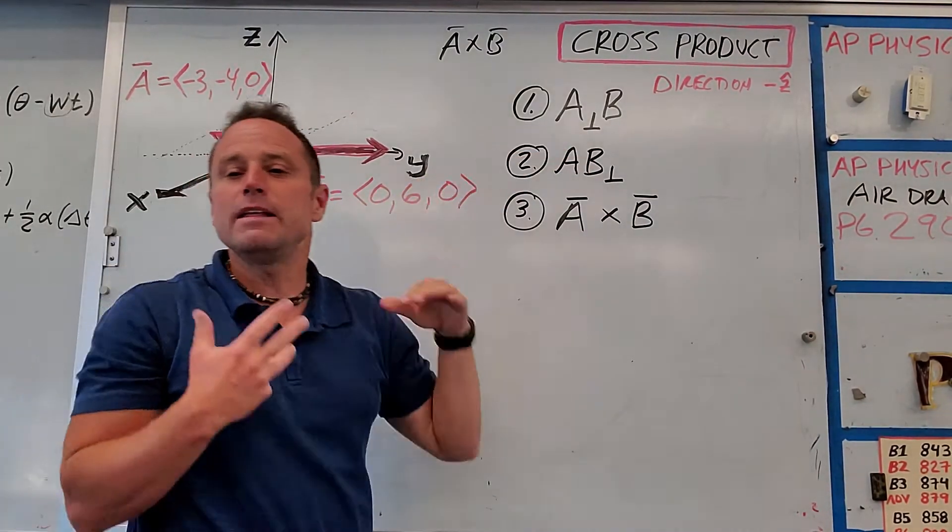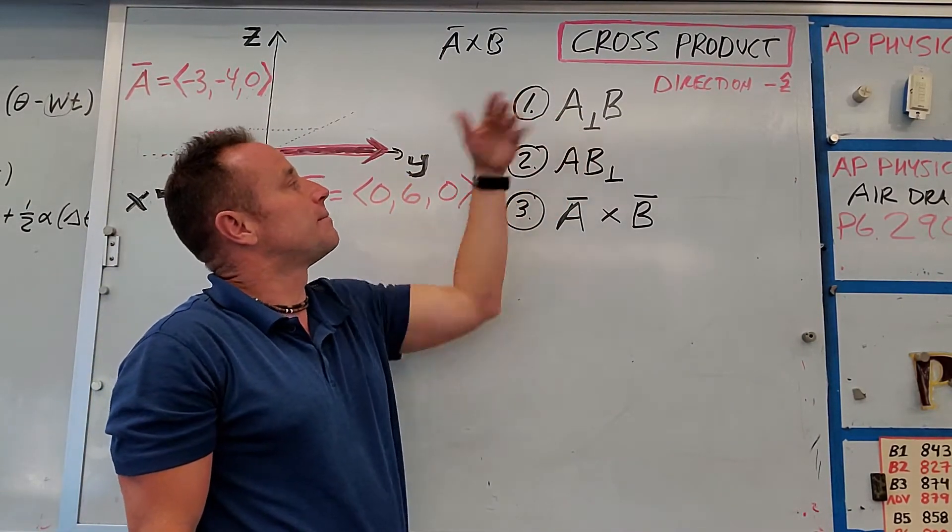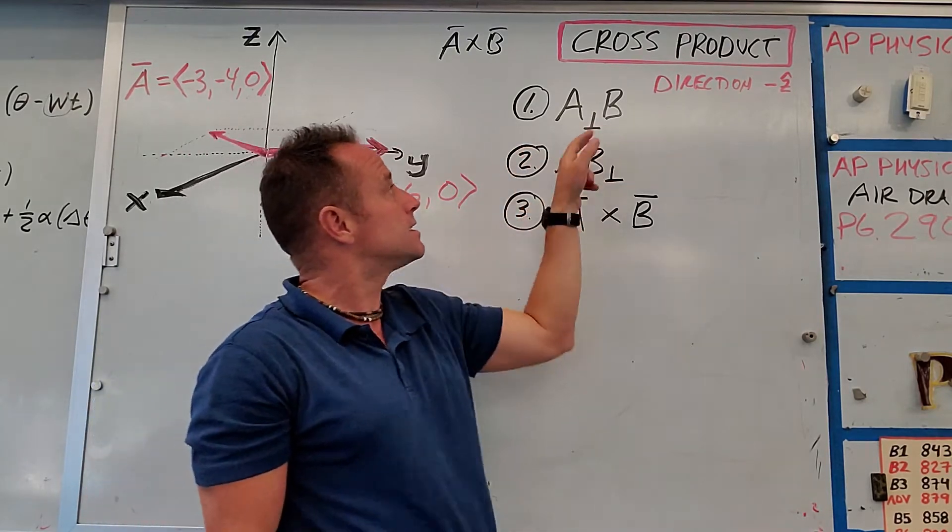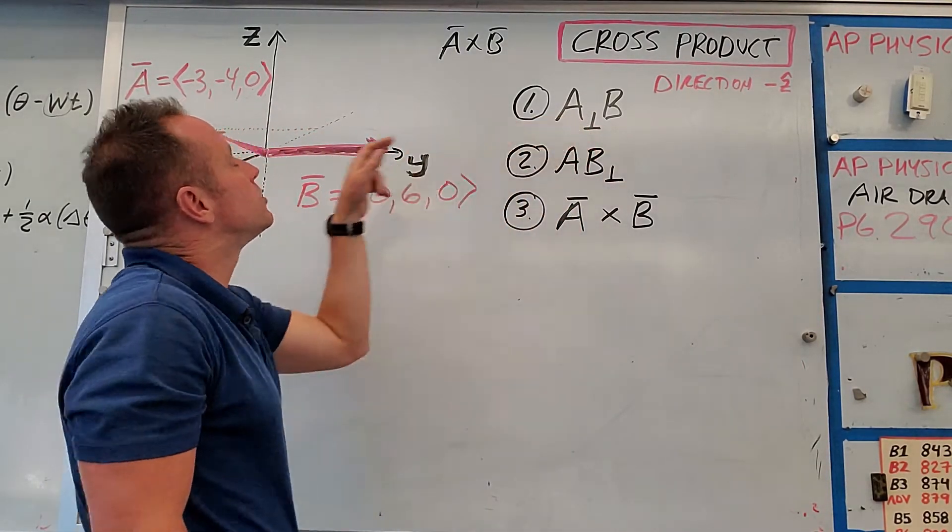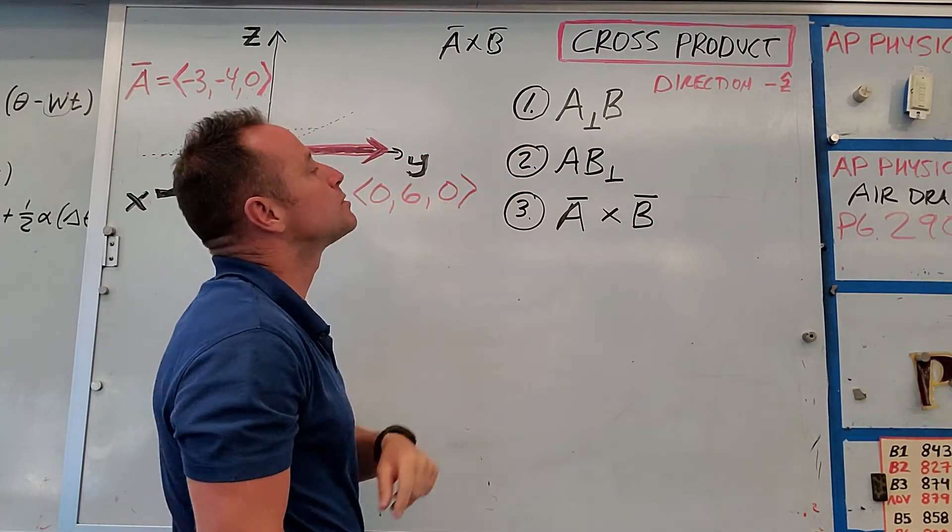Now, for me, the most versatile way, or the way that I will go to first, if I can see it, is to get the magnitude of the cross product. You just need to take the part of A that is perpendicular to B, and then times B itself.